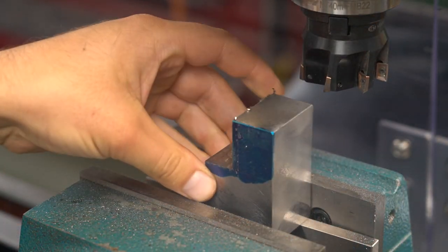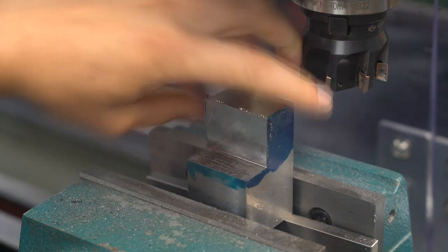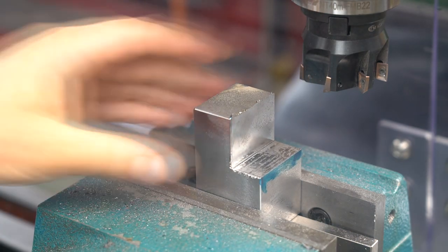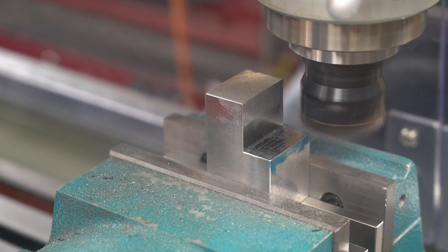A 90 degree face mill doesn't cut a perfectly smooth sidewall so I'm just flipping the piece over so I can clean up the face.